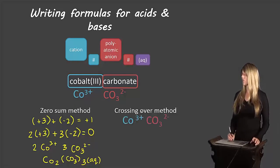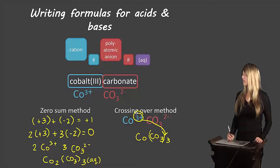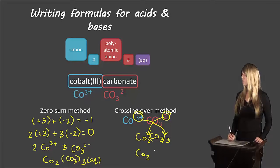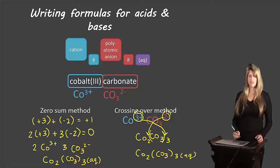We can also use the crossing over method. Writing all symbols next to each other, we use the charge on cobalt (3+) as the subscript for the carbonate — so we need brackets around CO₃ with a 3 outside — and the charge on carbonate (2−) as the subscript for cobalt. We end up with Co₂(CO₃)₃, then write our subscript (aq).